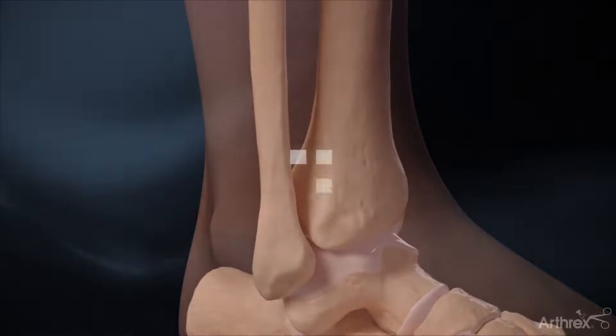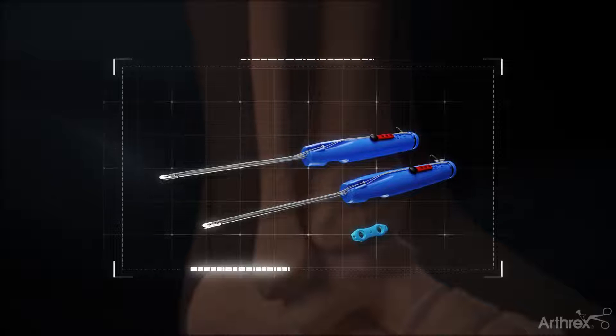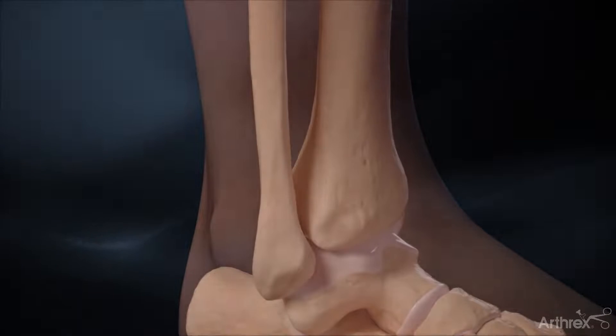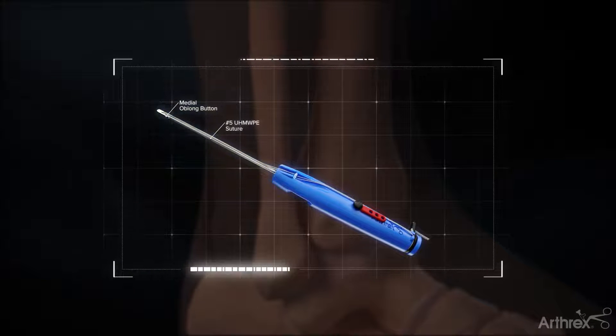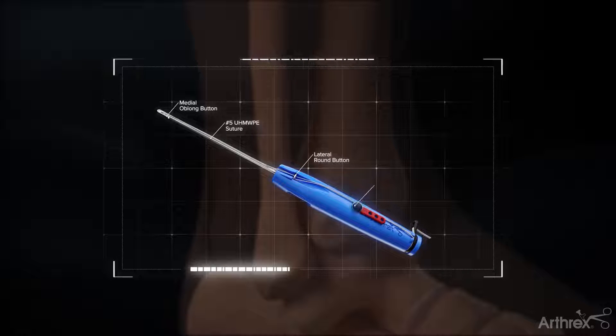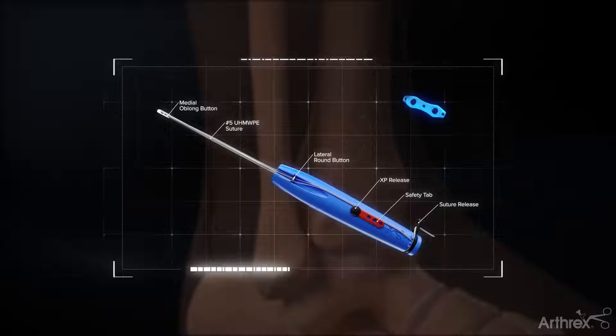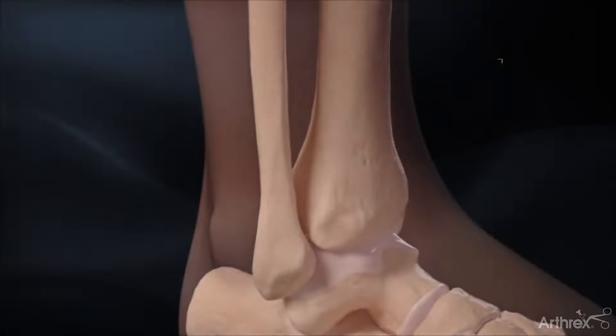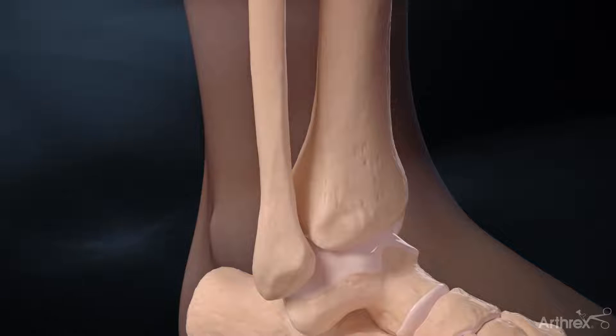Isolated syndesmosis injuries can be treated with a minimally invasive technique by using two syndesmosis tightropes and a buttress plate. The Syndesmosis Tightrope XP implant system features a unique delivery mechanism that allows the user to insert a syndesmosis tightrope implant without pulling a needle through the medial skin. The XP gives the user control to flip the medial oblong button below the skin for less soft tissue interposition.